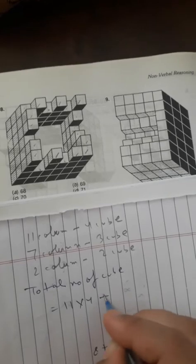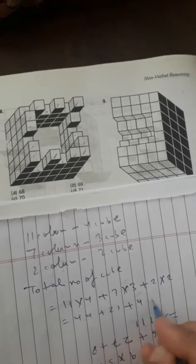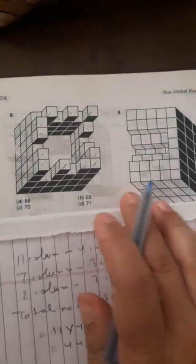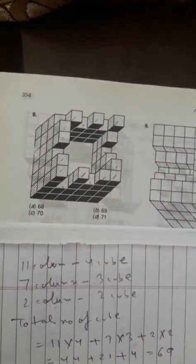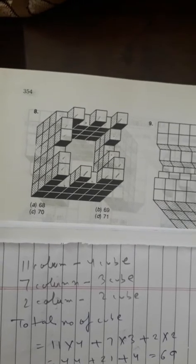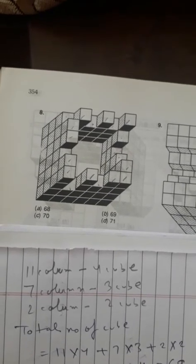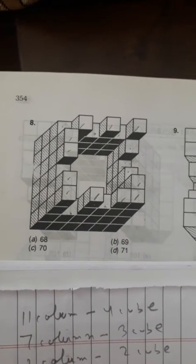Eleven into four, plus seven into three, plus two into two — that is forty-four plus twenty-one plus four, which comes to sixty-nine. The answer is sixty-nine for this figure. In this way, for any figure, you just have to see clearly how many cube heights there are — four, three, two, one — and count the number of columns for each, then add them up to get your answer.